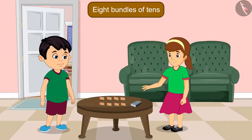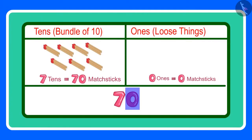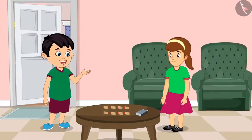Aarti says: You are not doing this correctly, Chonu. Wait, let me explain. 70 has 7 tens and 0 ones. Chonu asks: 0 ones? What does 0 ones mean? Aarti explains: 0 ones means there is not even a single loose matchstick. For 70 matchsticks, you will need to make 7 bundles of 10 matchsticks each. Chonu says: Okay, now I have understood. Thank you, Aarti.